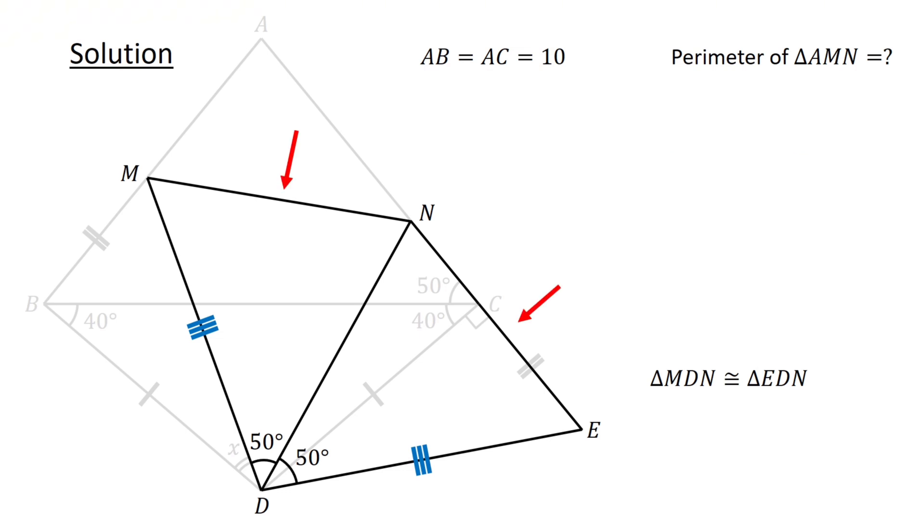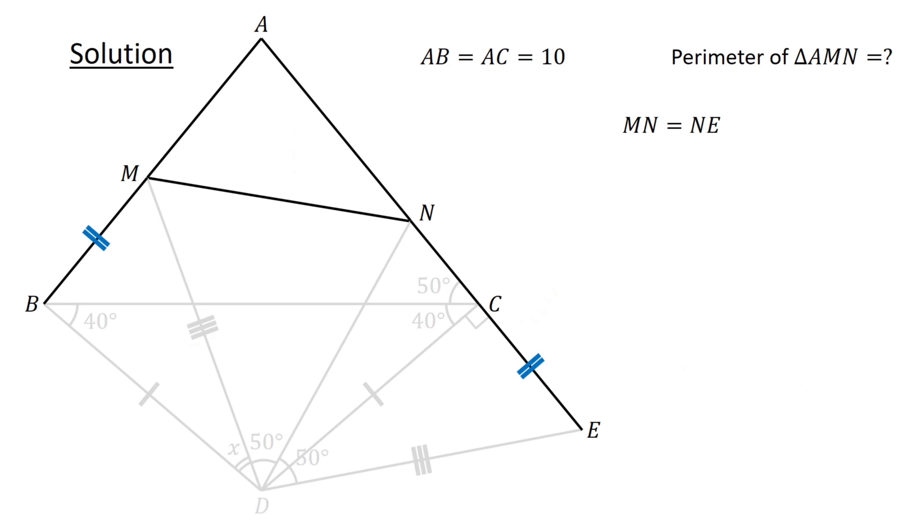Since MN and NE are corresponding sides in congruent triangles, MN equals NE. Finally, consider this part of the diagram. From the diagram, we see that NE equals NC plus CE. Since CE equals MB, we have NE equals NC plus MB. Thus, MN equals NC plus MB.